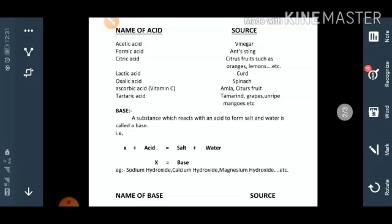Now we have base. A substance which reacts with an acid to form salt and water is called a base. So if X is a substance and that reacts with acid to form salt and water, it means X is a base. Some examples of bases are sodium hydroxide, calcium hydroxide, magnesium hydroxide, etc.